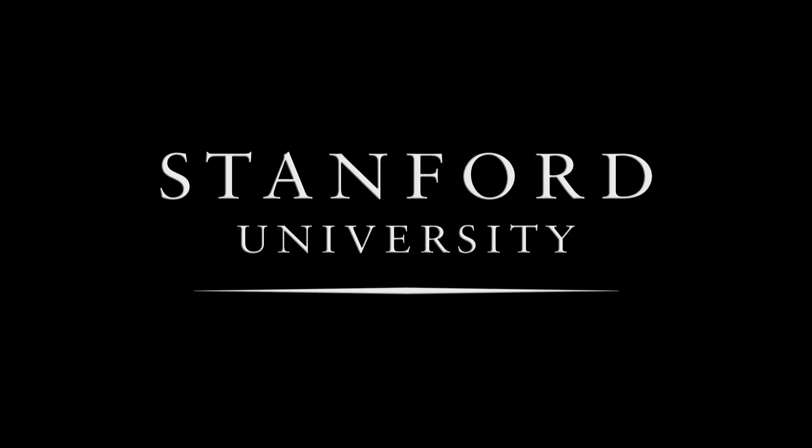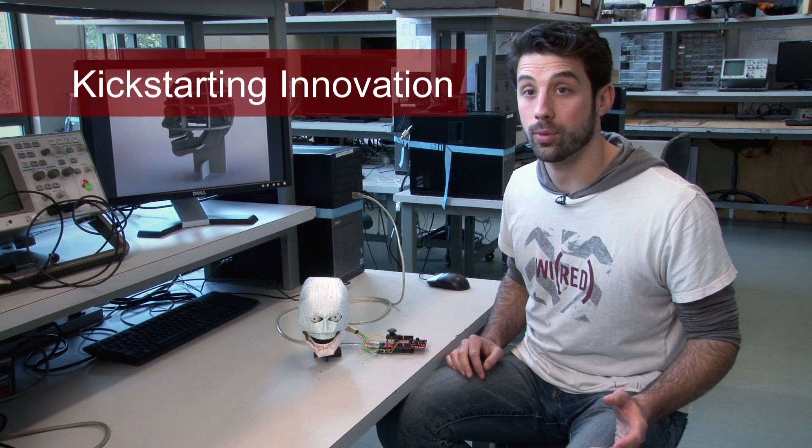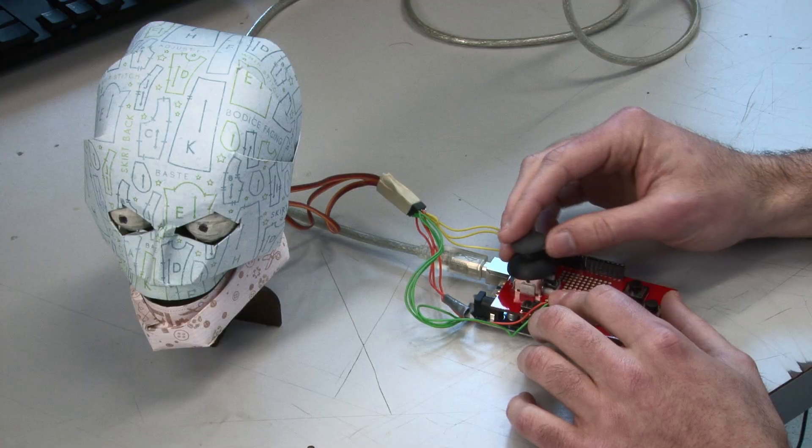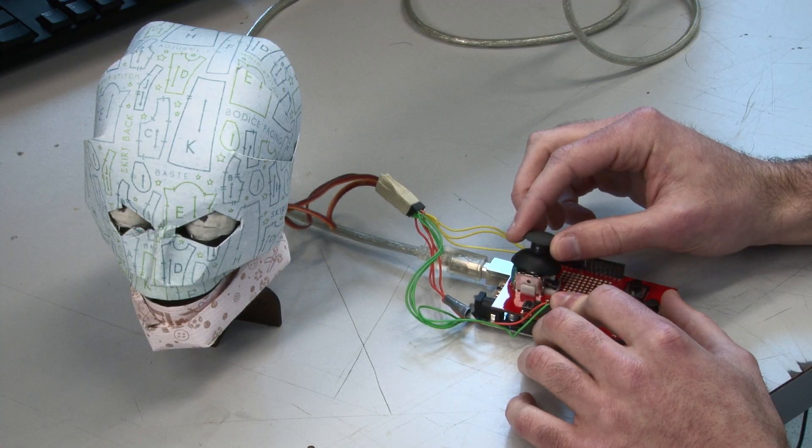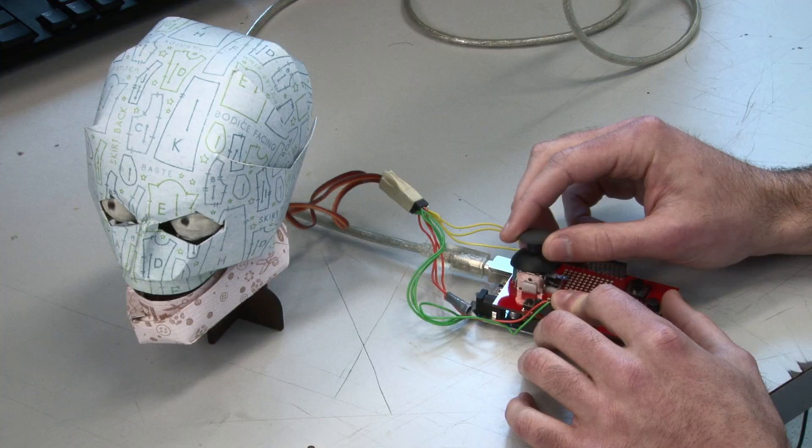Stanford University. So here's how it works. This joystick controls both axes of the eye's motions. Left and right, up and down, and then a combination.